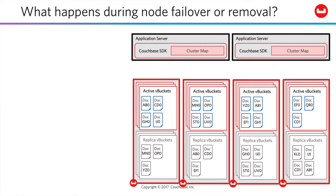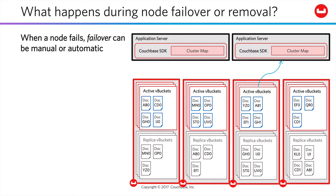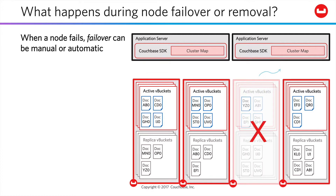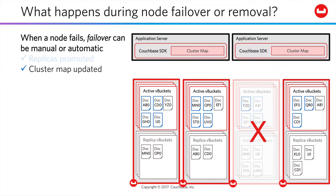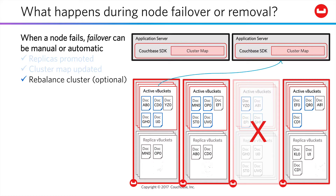Similar behavior happens in reverse if a node fails. The failover process can be either manual or automatic — that's your choice. When failover happens, replicas are promoted and cluster maps are updated. Rebalancing can be initiated at that time, or deferred if there's a risk of cascading failure.